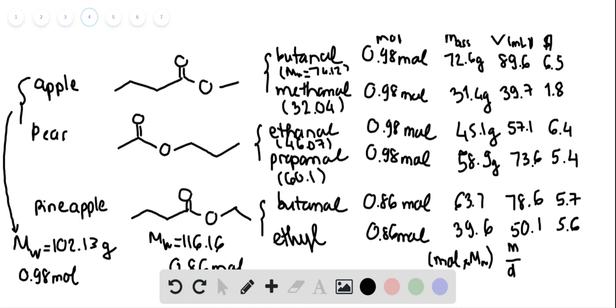So because it's one-to-one ratio, which means that the mole of the alcohol will be 0.98 in this case and 0.86 in this case. Based on this, you can calculate the mass of the alcohol by using molecular weight times the mole.